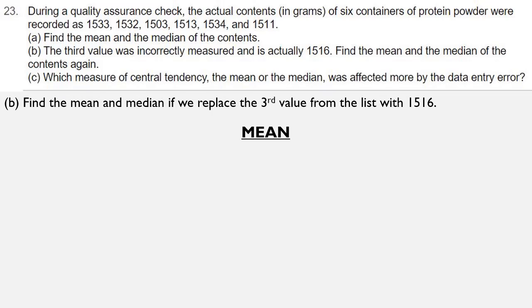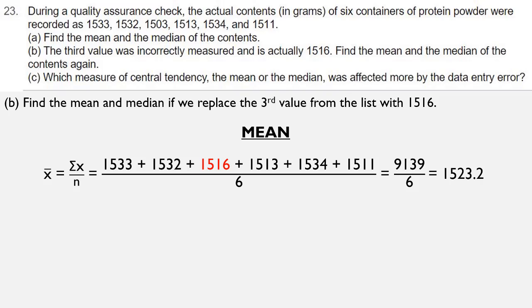So in that mean formula, we'll see the exact same thing, but you'll notice when I wrote my numbers in the numerator, there's a number in red, 1516. That's the 1503 that's being replaced. So when we add those together, we get 9139, and when we divide that by 6, we get 1523.166. But since it says to round off to a single decimal, we're getting 1523.2.